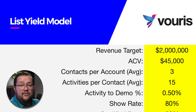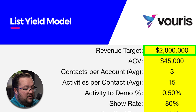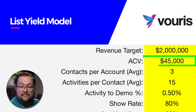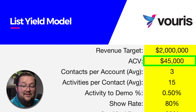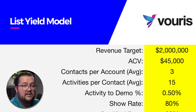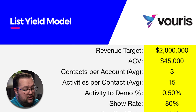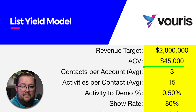So let's say our revenue target is $2 million and our average contract value is $45,000. The next question here that we need to fill out is how many contacts per account on average. So if you're targeting larger organizations, you might have five, seven, even ten contacts you could possibly reach out to. For this example, let's use three.